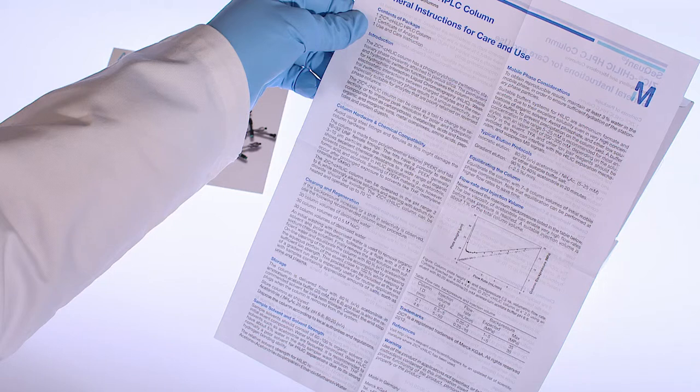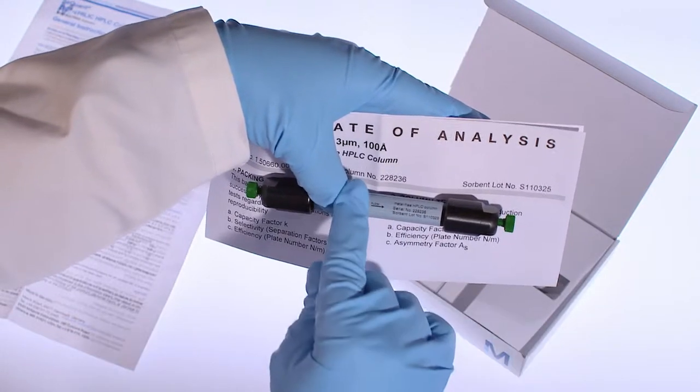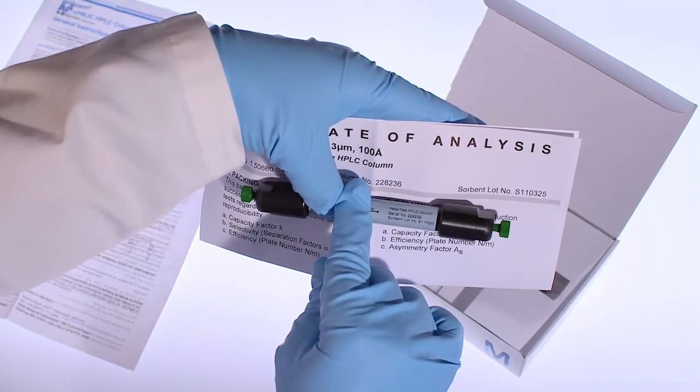This includes, for example, column equilibration instructions. Each single column is individually tested and is packed with its own unique certificate of analysis. The individual column number is printed both on the certificate of analysis as well as on the column label.